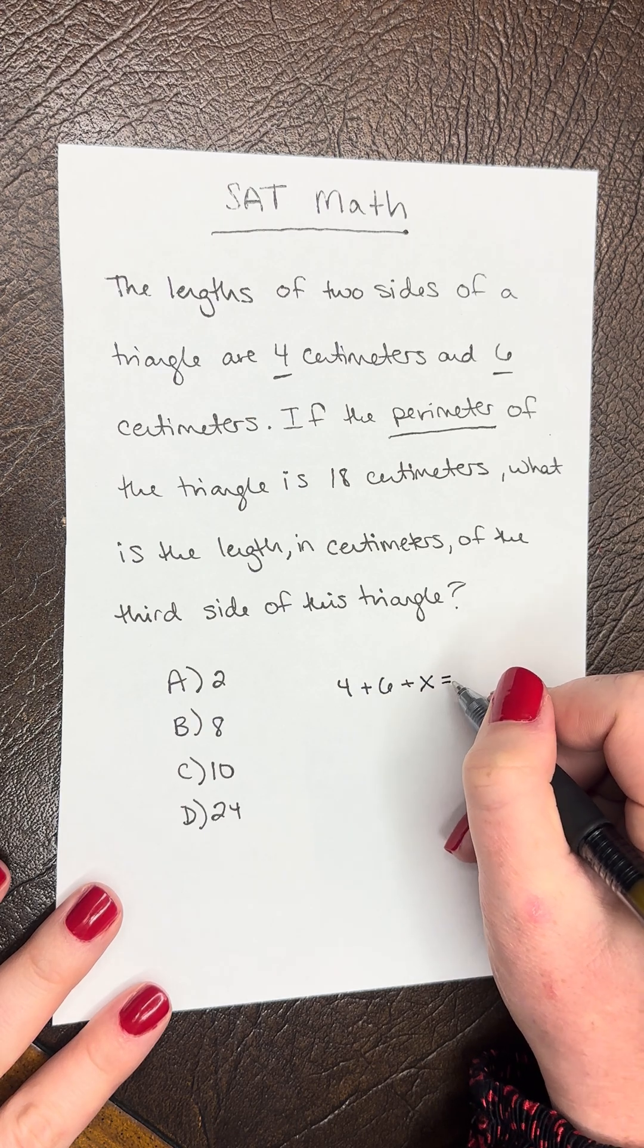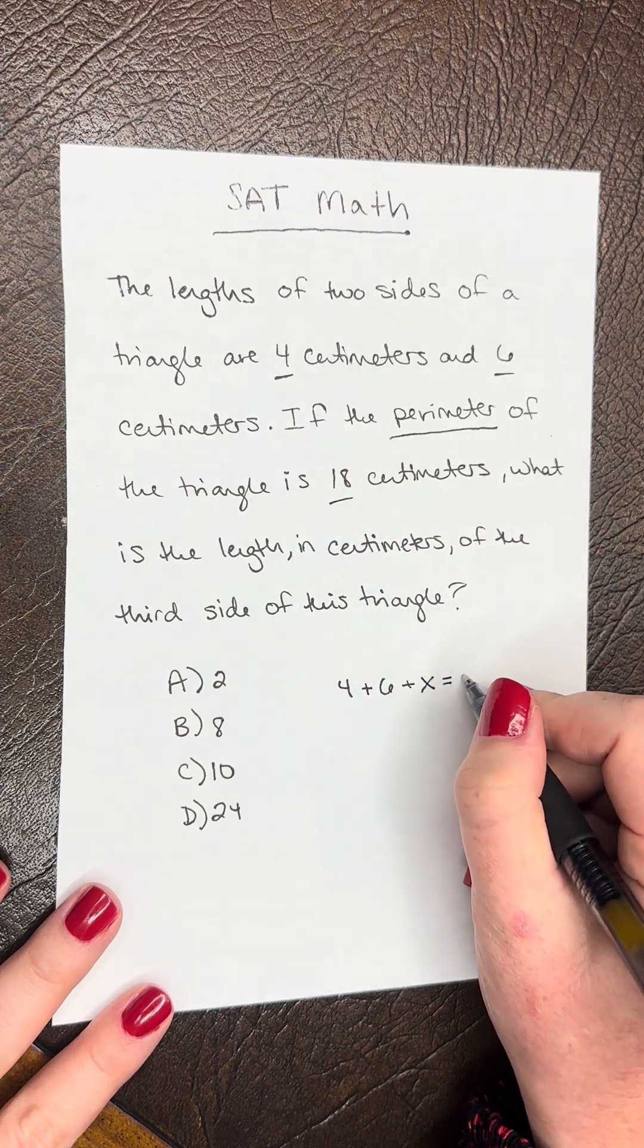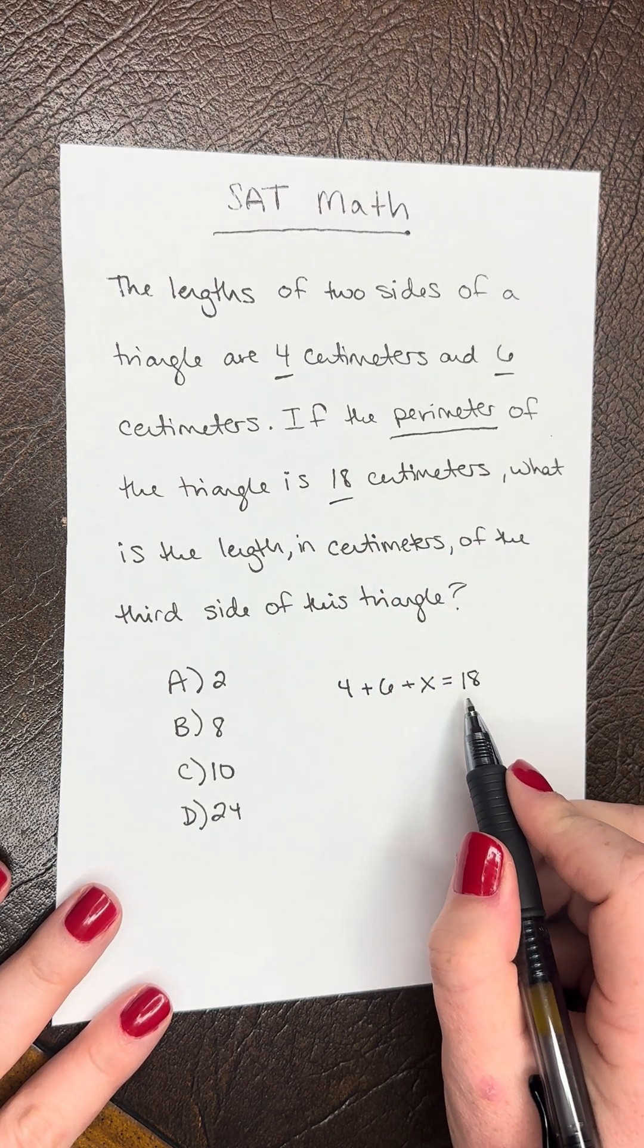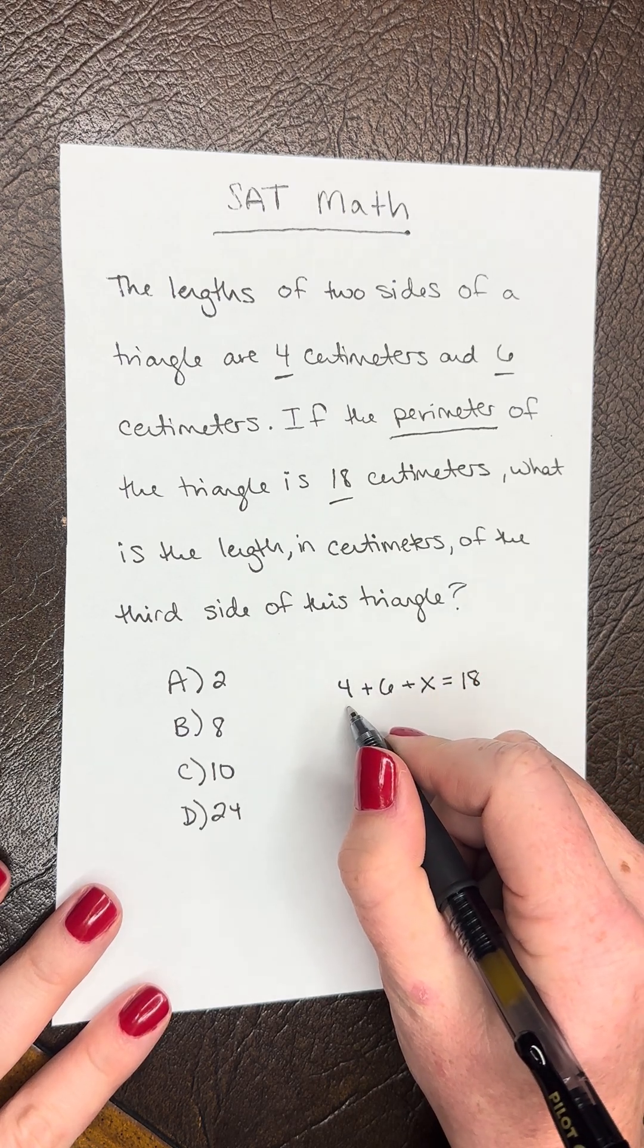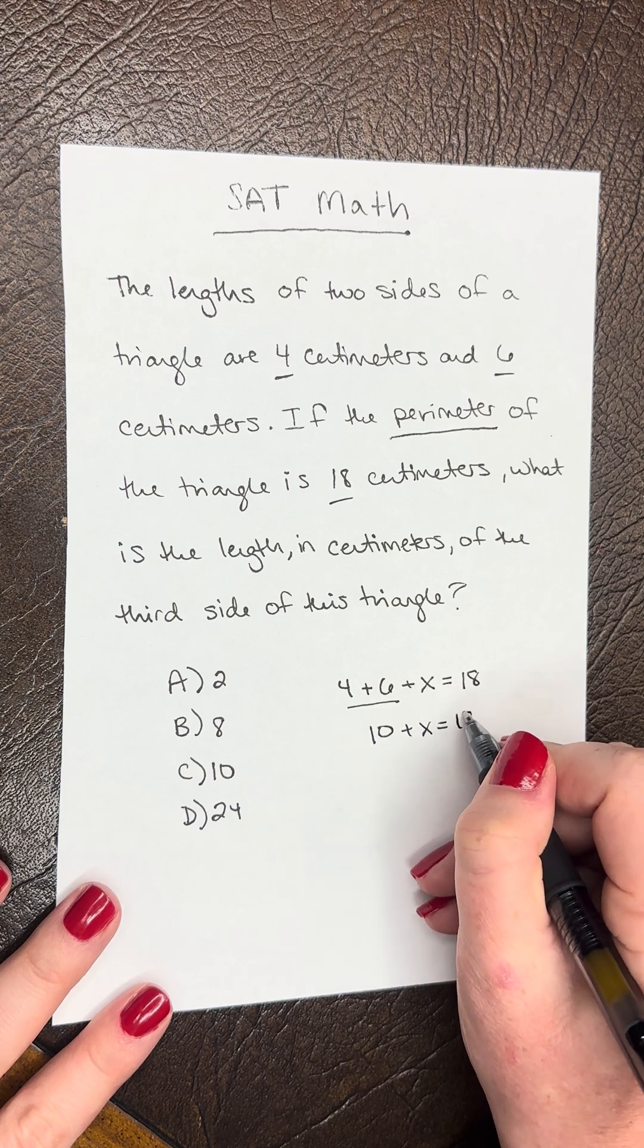We set it equal to our perimeter, which is 18. So we have 4 plus 6 plus x equals 18. Then we simplify: 4 plus 6 gives us 10 plus x equals 18.